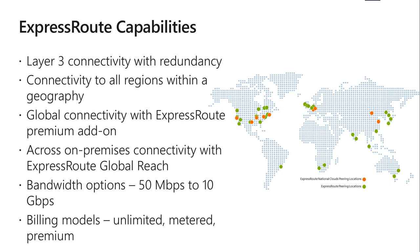Another benefit is bandwidth options. You can purchase ExpressRoute circuits for a wide range of bandwidths from 50 megabytes per second to 10 gigabytes per second. Be sure to check with your connectivity provider to determine the bandwidth they support. Of course, more bandwidth means more expensive.